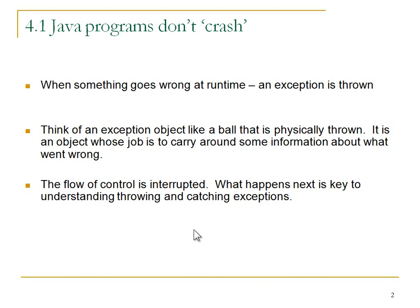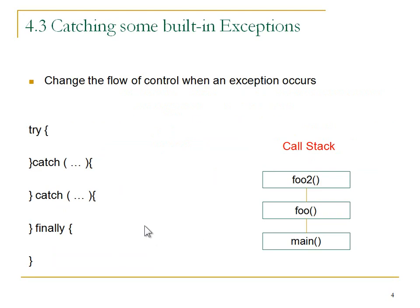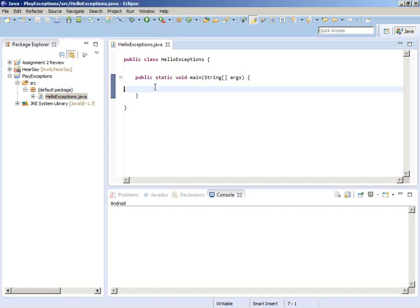An exception is something that happens at runtime during the execution of a specific line of code. Think of an exception as an object - it's like a ball that's physically thrown. This object's job is to carry some information about what went wrong. Something goes wrong at runtime, the flow of control is interrupted, we cannot continue executing the program because an exception has been thrown.